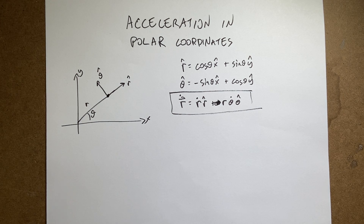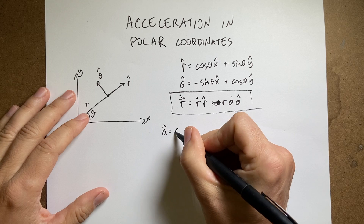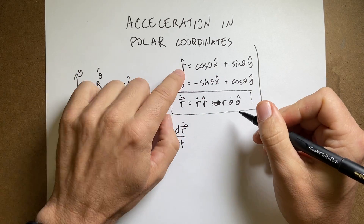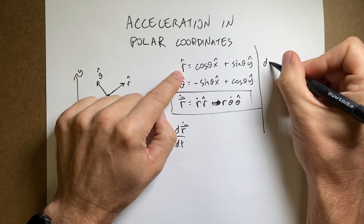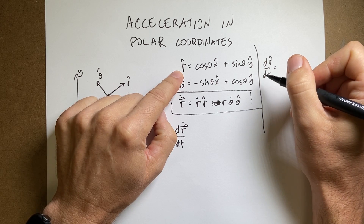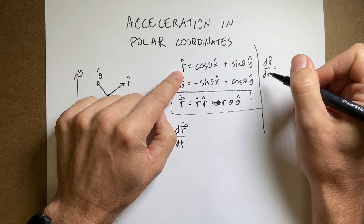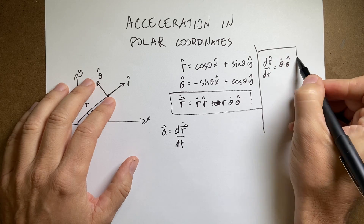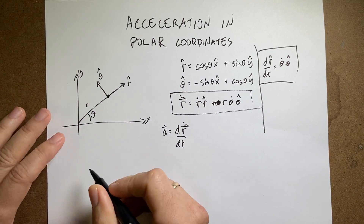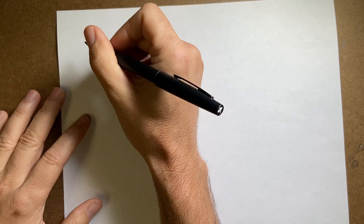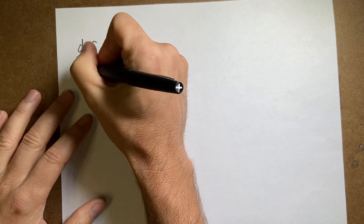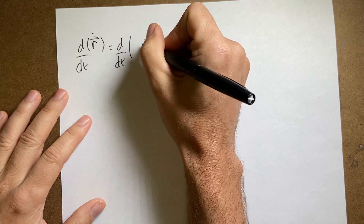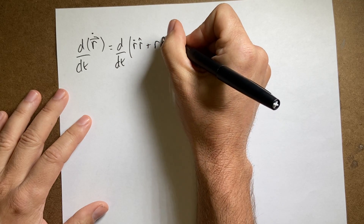Now what about the acceleration? We just need to differentiate again. The acceleration in polar coordinates is going to be the derivative with respect to time of the velocity. I should also note that the derivative of r-hat with respect to time is theta-dot theta-hat — I established that previously but didn't take the derivative of theta-hat. We're going to need that this time, so let's start on a new sheet. The acceleration is d/dt of r-dot r-hat plus r theta-dot theta-hat.